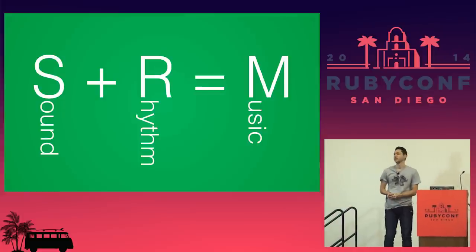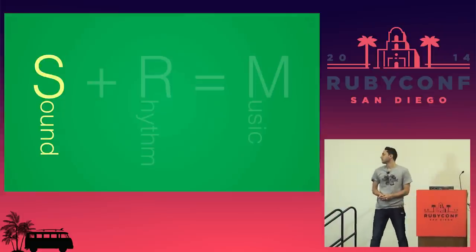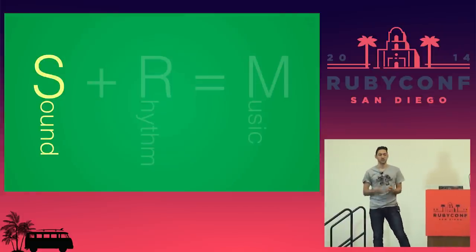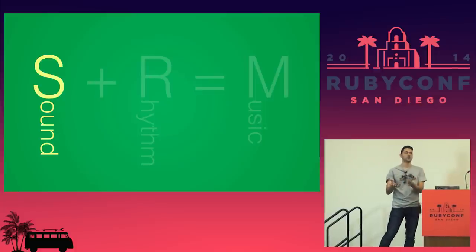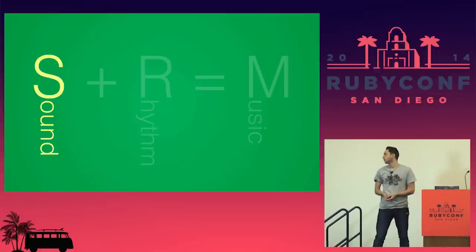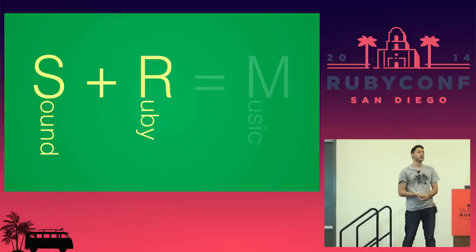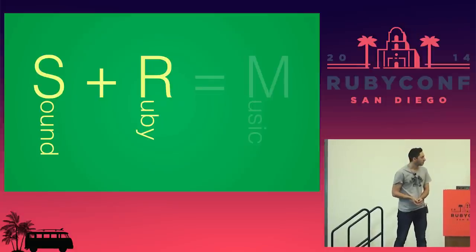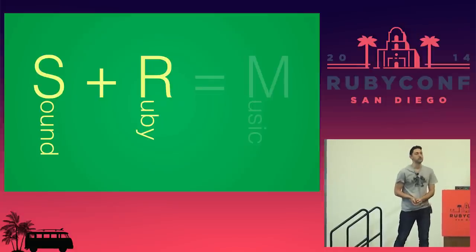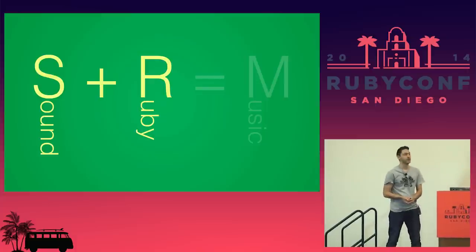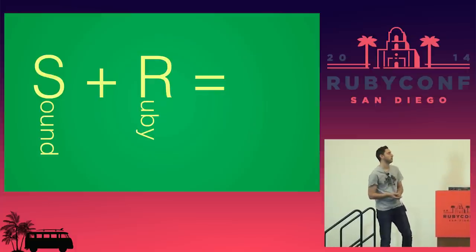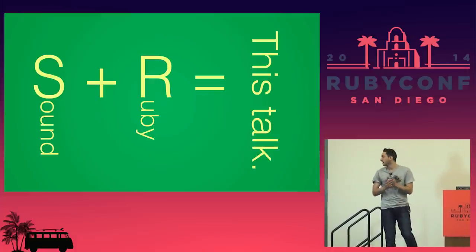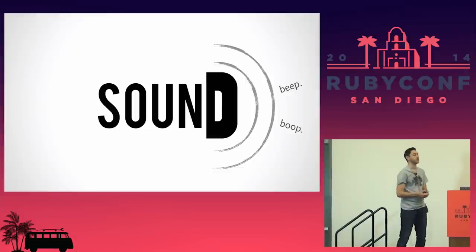But what is music? To me, music is sound and rhythm put together in some interesting way. We're going to be looking at sound in this talk, and we're not going to be looking at rhythm, but we're going to replace it with another interesting R that we know very well — Ruby. So we're going to be talking about sound and Ruby.